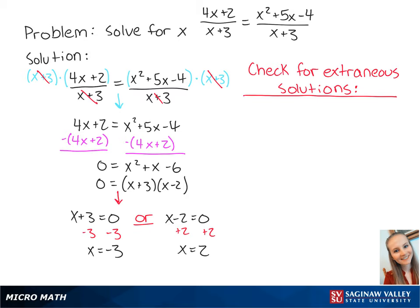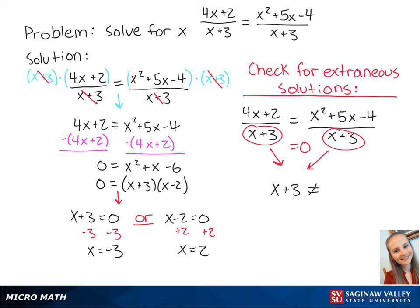Now we have to check for extraneous solutions. For a rational equation like this one, an extraneous solution is when one of the denominators is equal to 0. Since both of our denominators are the same, we're going to make one equation where x plus 3 cannot equal 0.